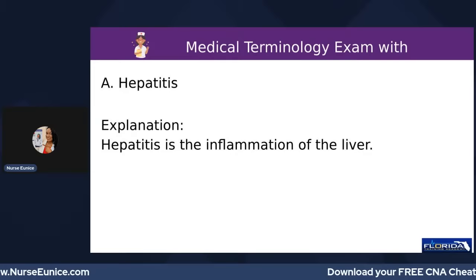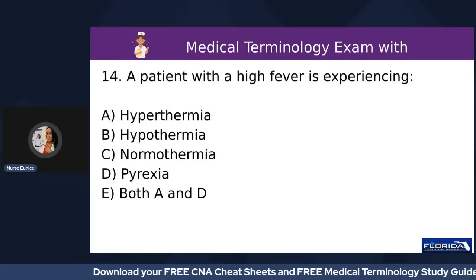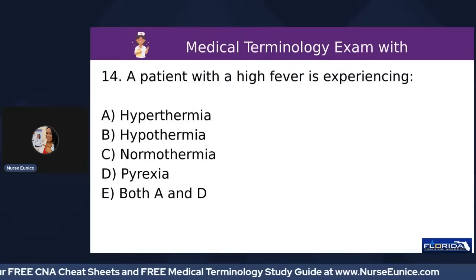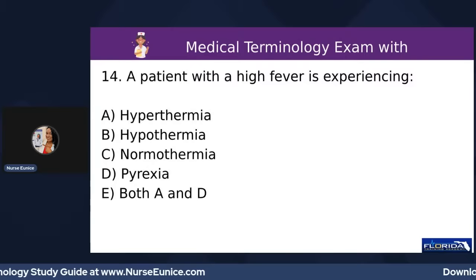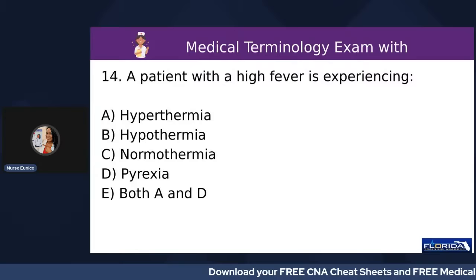Number fourteen: a patient with a high fever is experiencing — A) hyperthermia, B) hypothermia, C) normothermia, D) pyrexia, or E) both A and D. The answer is E, both A and D. Hyperthermia refers to a high body temperature or fever. Pyrexia refers to a body temperature greater than 100.4°F — it's not a term we use often, but if you're working with pediatric populations, you'll probably hear it.